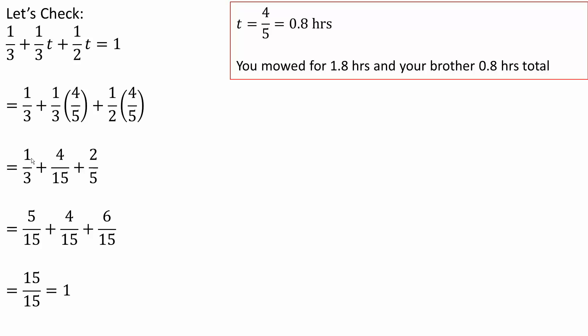So 1/3 + 1/3(4/5) + 1/2(4/5). I would get 1/3 + 4/15 + 4/10. Four divided by 10 is two-fifths.